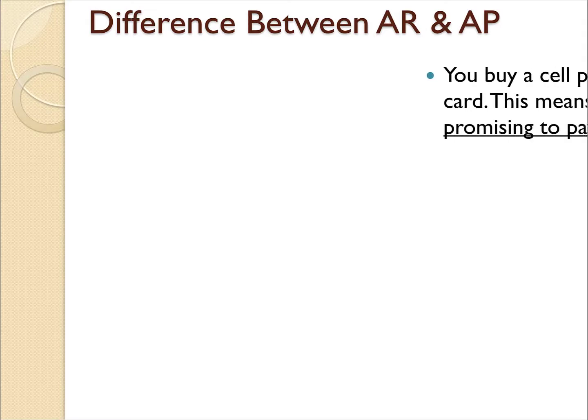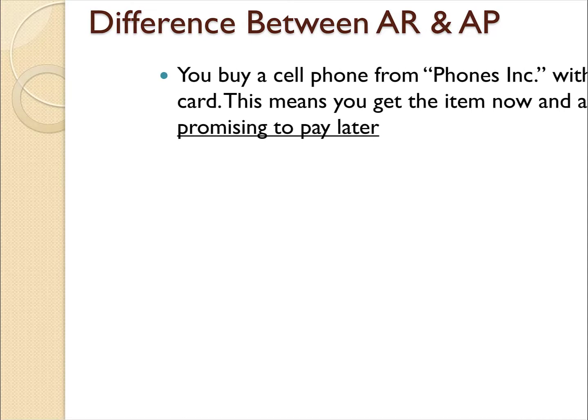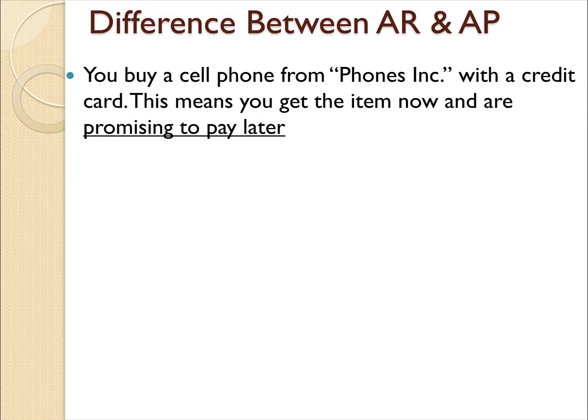Let's say you buy a cell phone from Phones Incorporated with a credit card. This means you get the item now and are promising to pay later. So if you were keeping track of your own personal financial records, would that be accounts receivable or accounts payable?